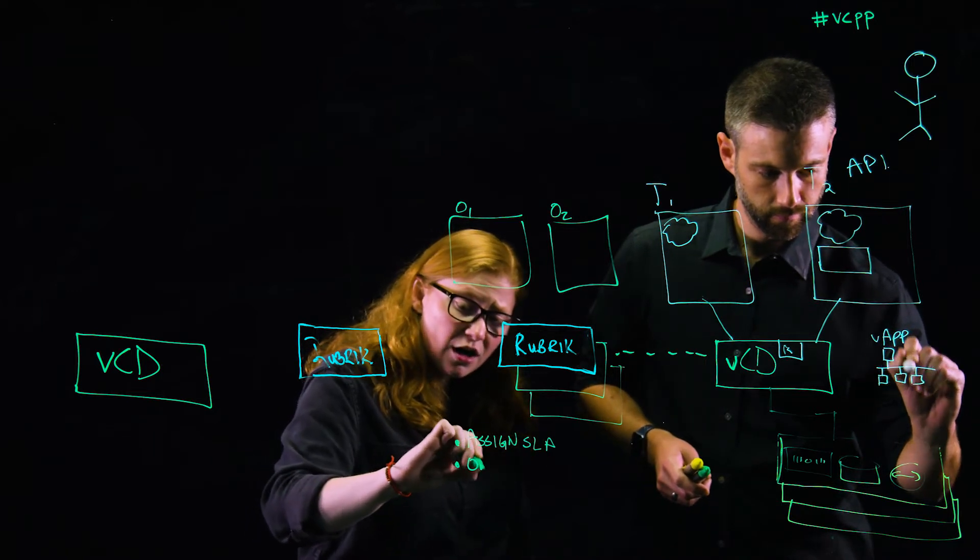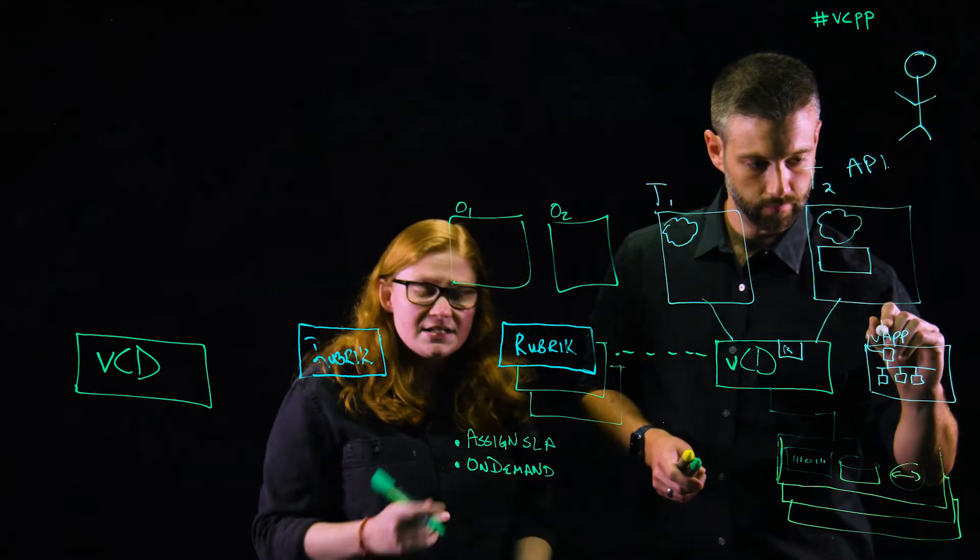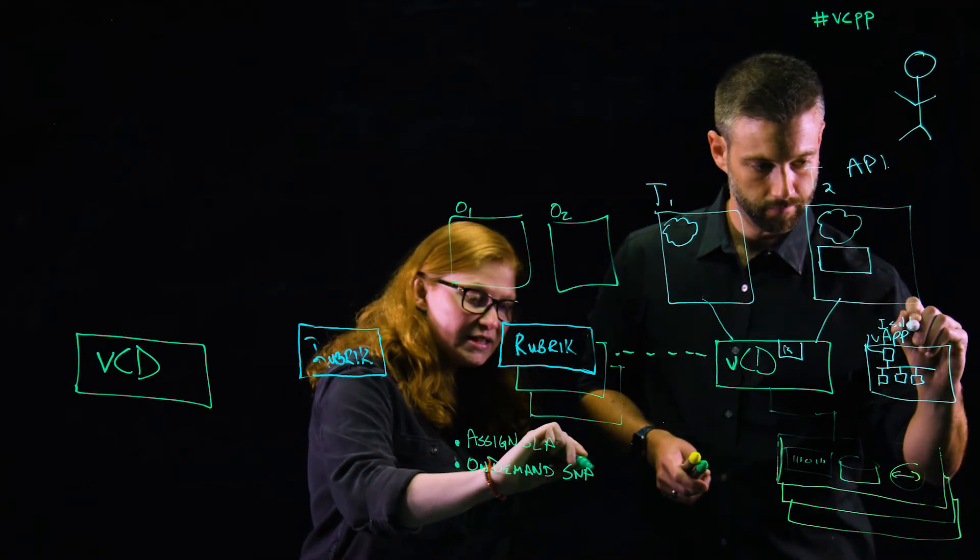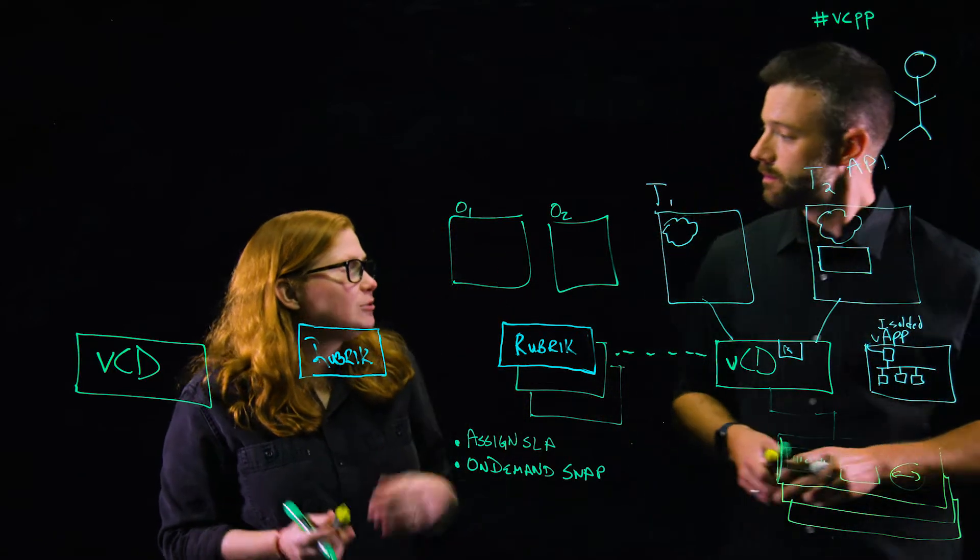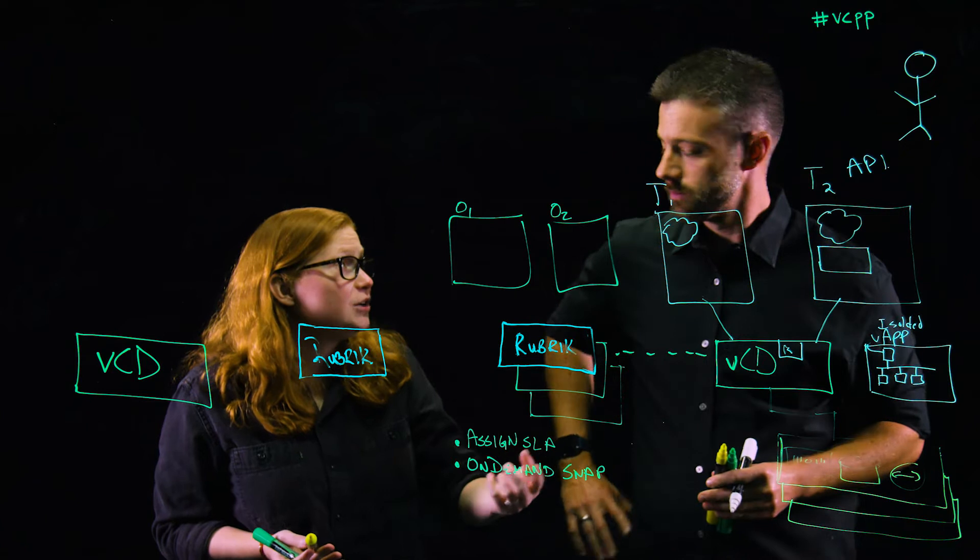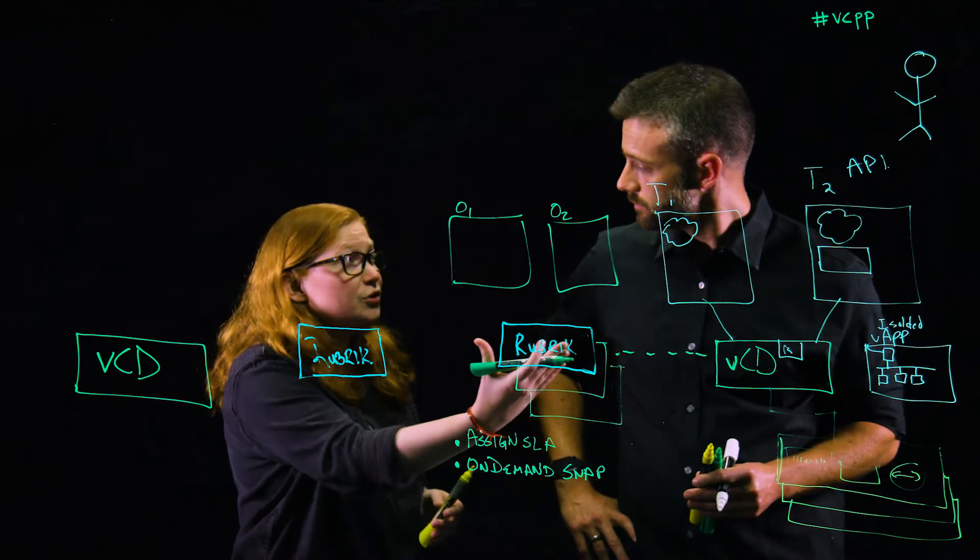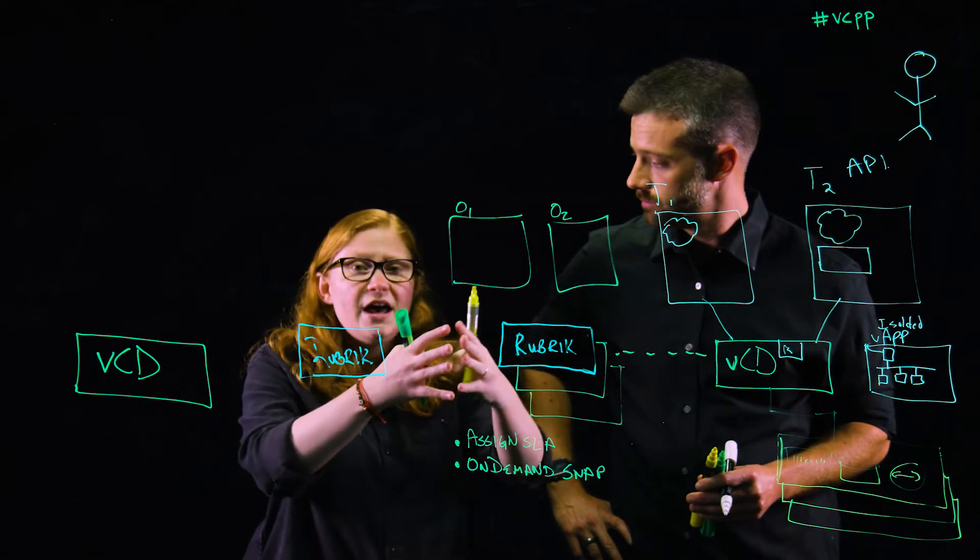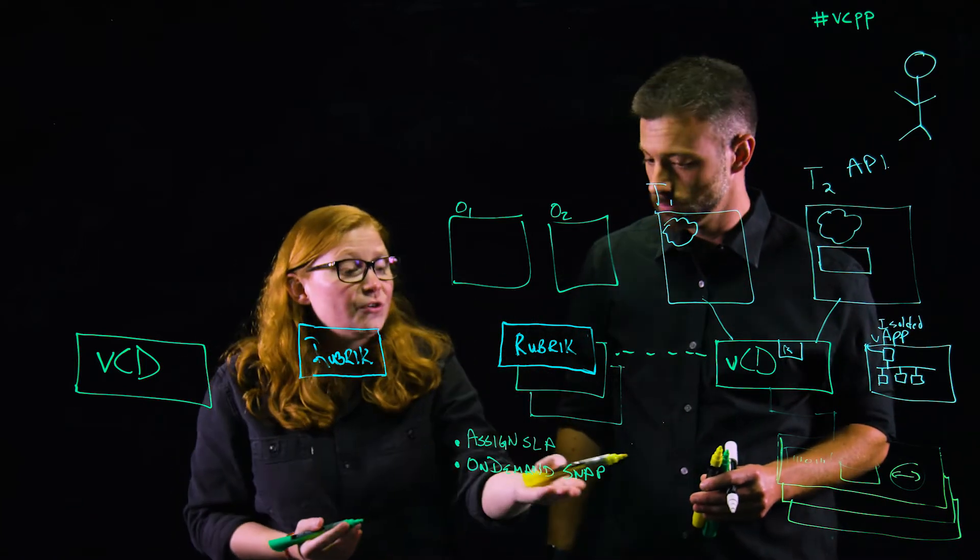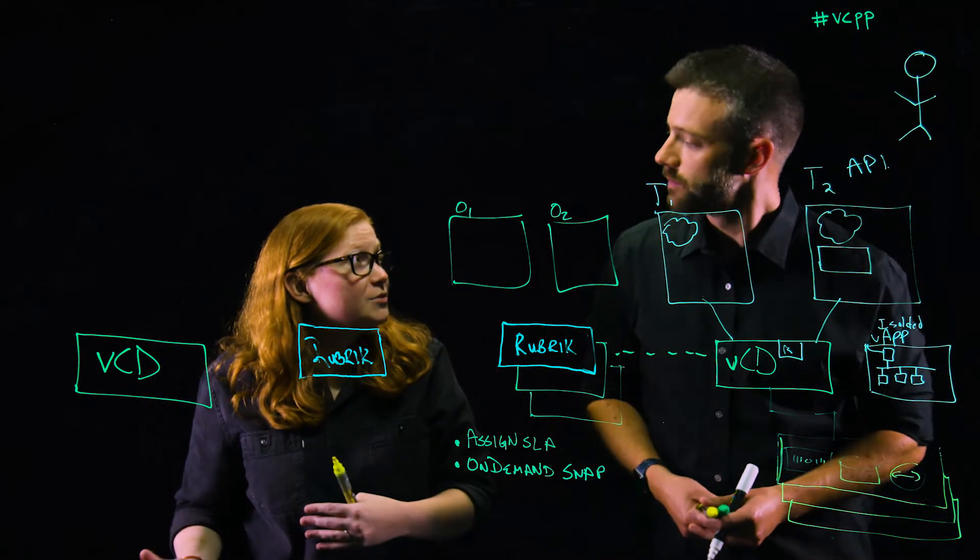Secondly, you're going to be able to do an on-demand snap. So if you're about to, for example, do some maintenance and you want to go ahead and protect that VApp before doing so, you can go ahead and specify, yes, take an on-demand snapshot right now rather than waiting till the next scheduled backup. And a very popular thing that our providers will do within VCloud Director is they'll actually specify within Rubrik a separate SLA policy just for on-demand snaps. That way, it's retained at a different level than the rest of your regularly scheduled backups.